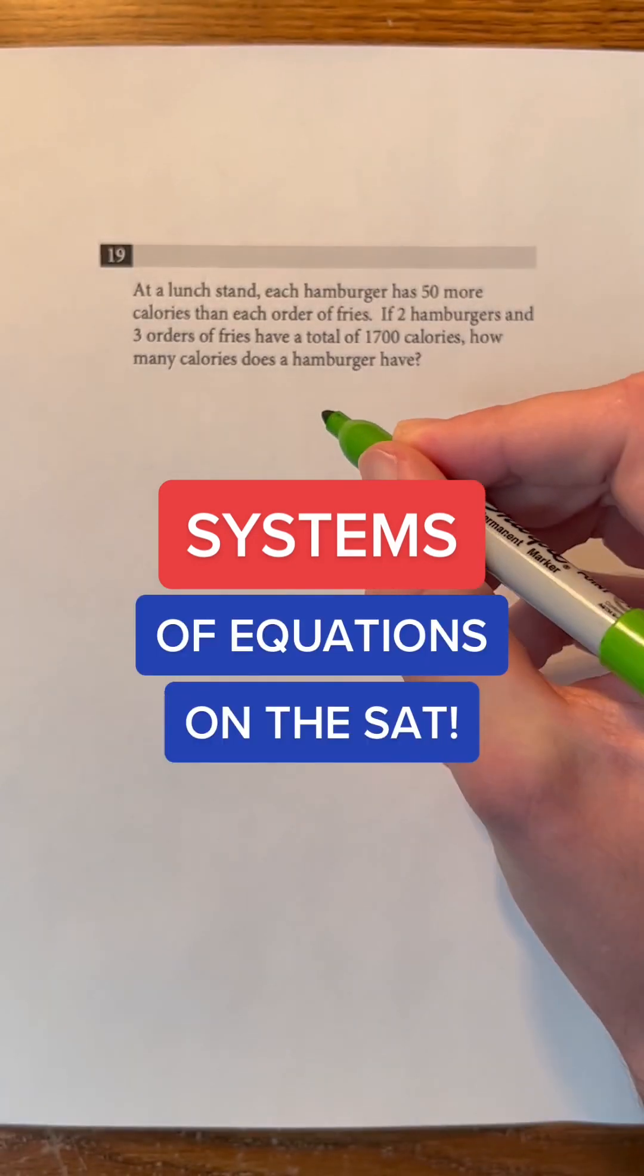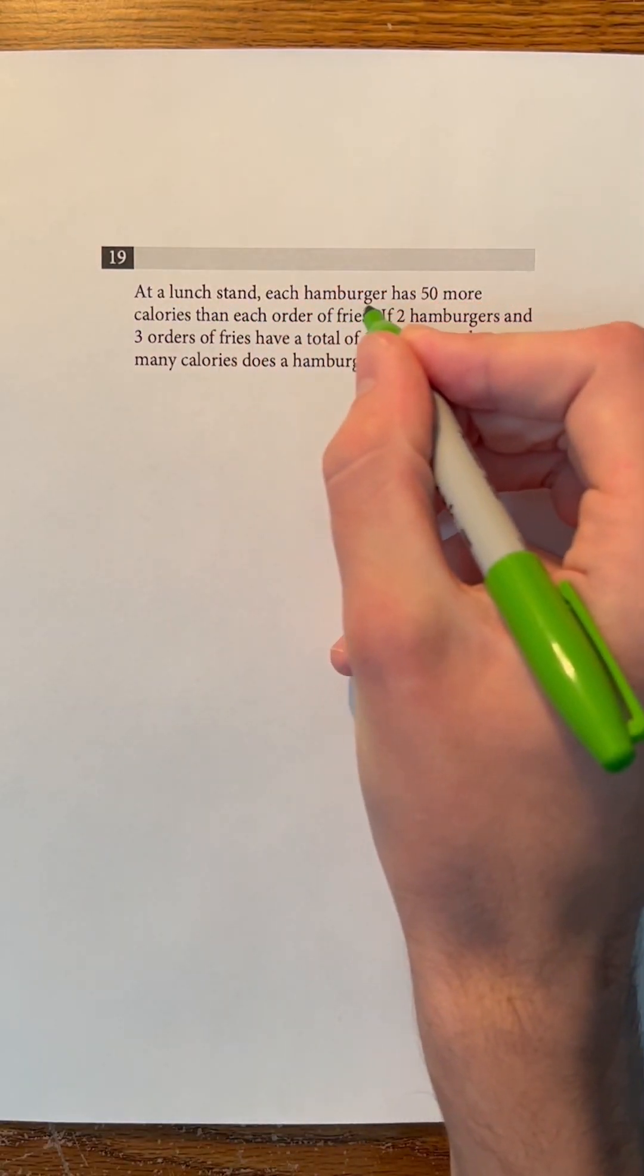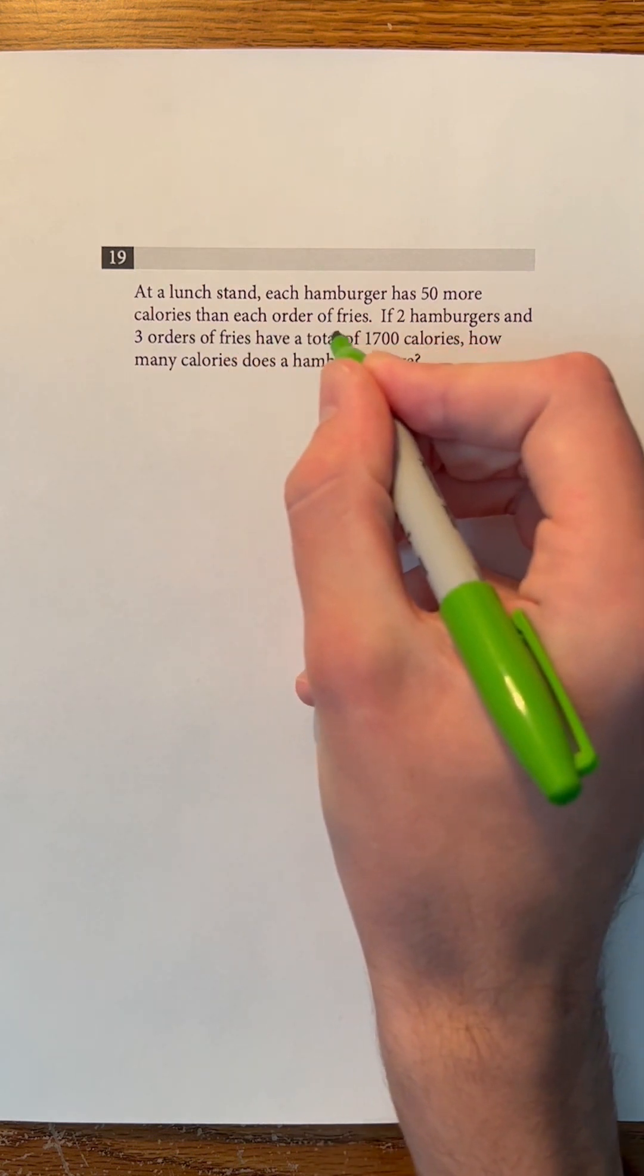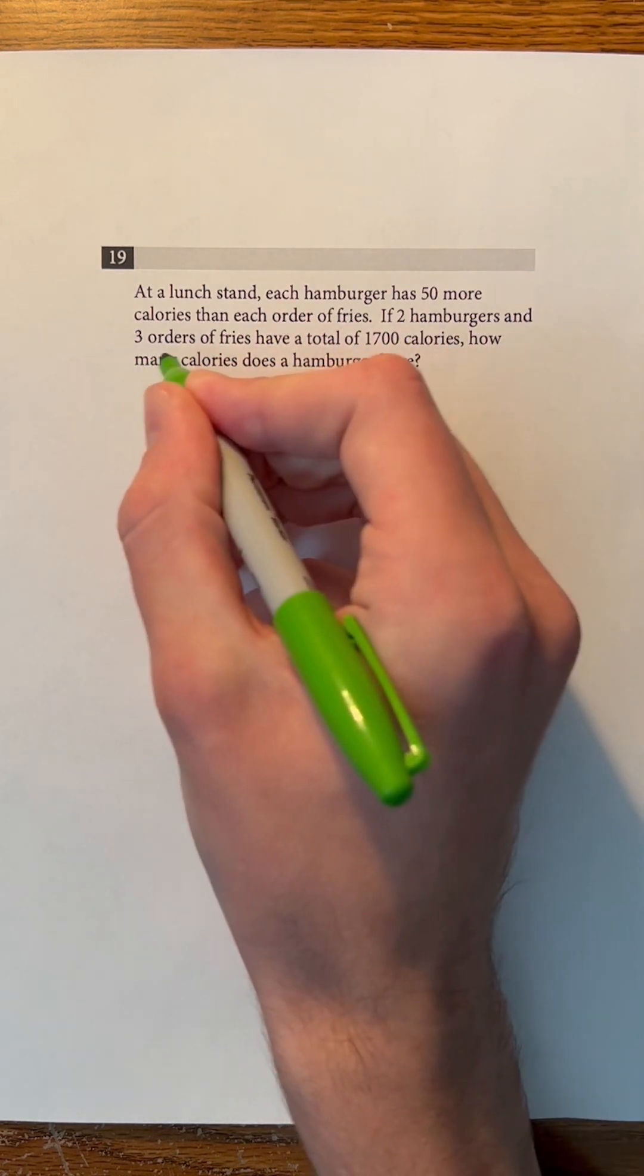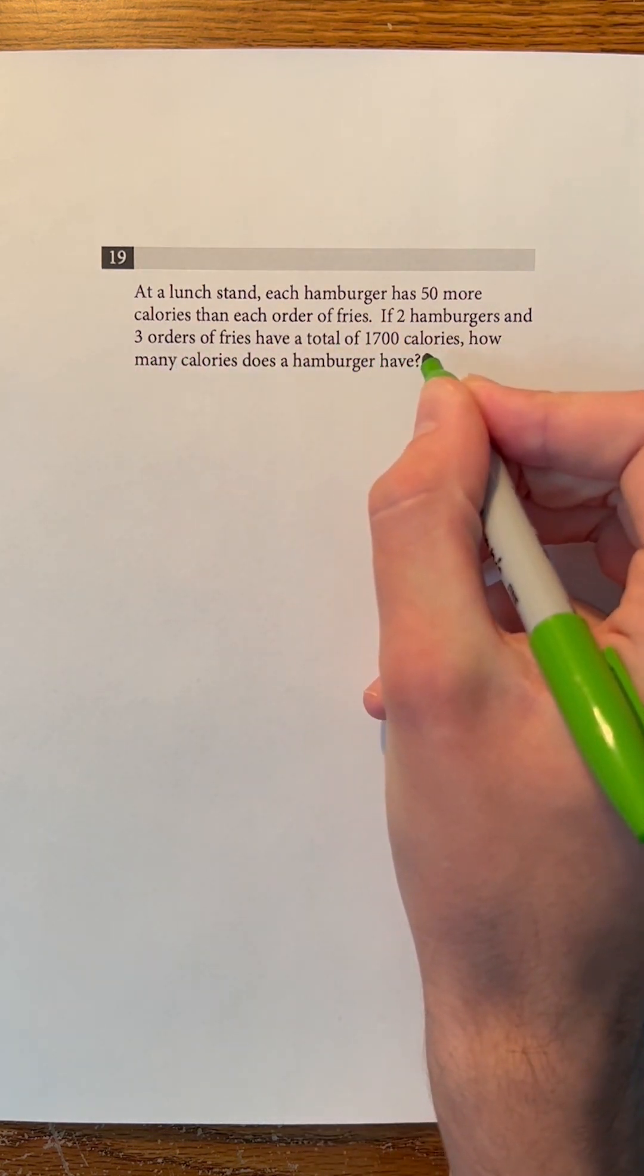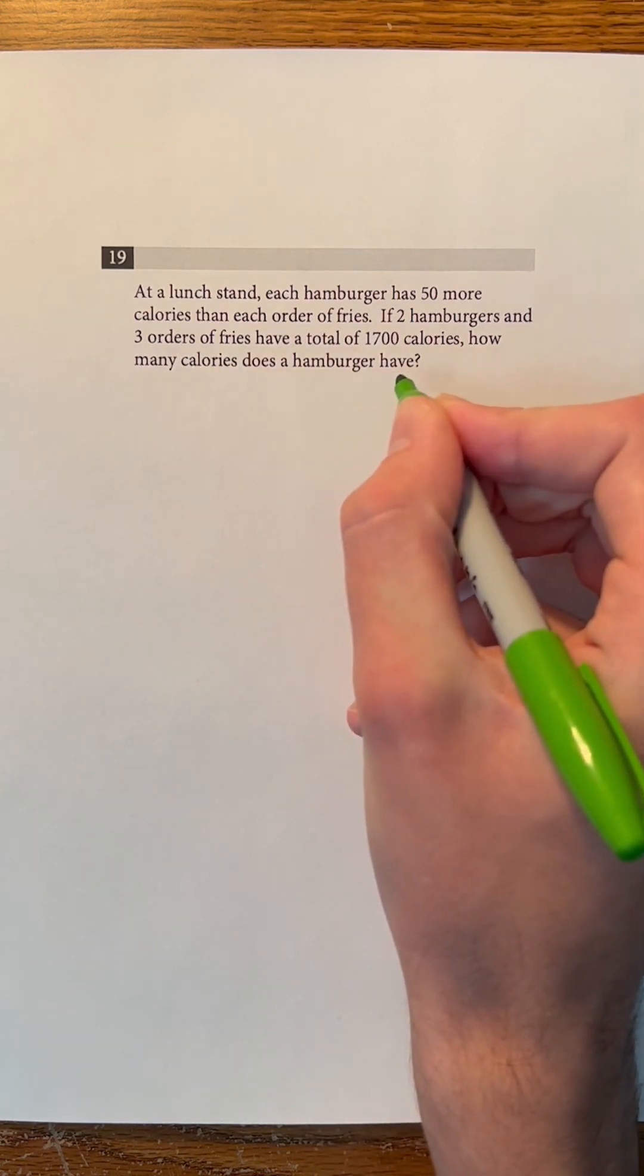Systems of equations on the SAT. At a lunch stand, each hamburger has 50 more calories than each order of fries. If two hamburgers and three orders of fries have a total of 1700 calories, how many calories does a hamburger have?